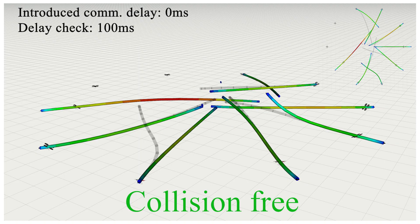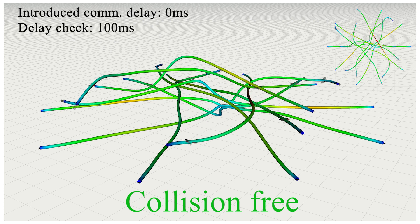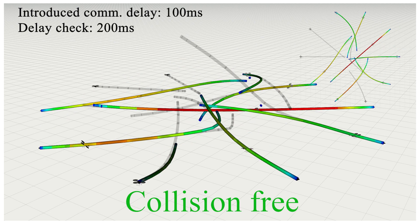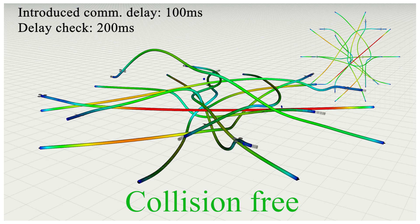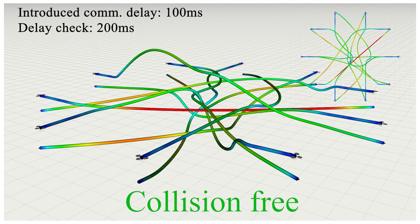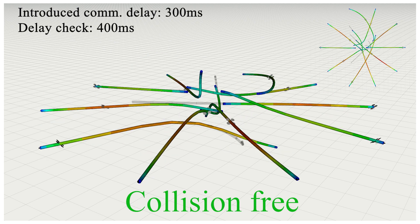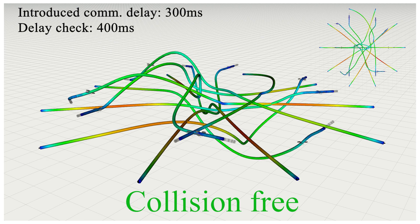Here's the simulation result with no artificially introduced communication delays. Next, we introduced 100 milliseconds communication delays into every message exchanged between agents — our MADER successfully achieves collision-free trajectories. We now introduce 300 milliseconds communication delays. You can see our MADER de-conflicts trajectories by publishing its newly optimized trajectory before committing to it.